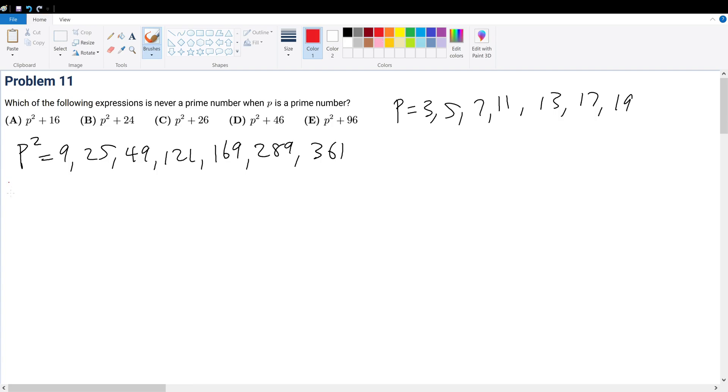Now, just methodically plug it in into A, then we plug it into B, etc., then we see what we get. So 9 plus 16, 25, that works. 25 plus that, 41. Boom, 41 is a prime, A is out. It's that simple.